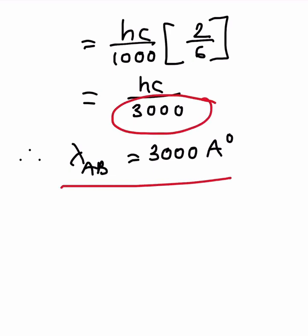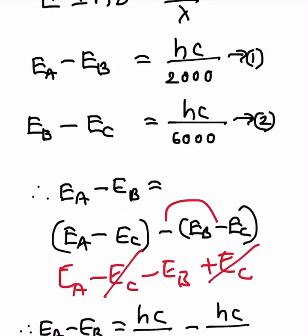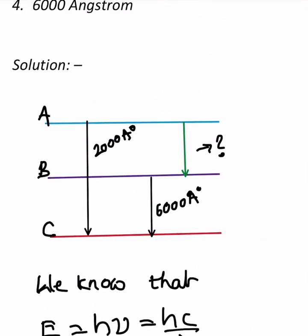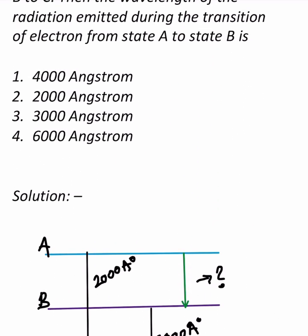Since the denominator is 3000, the wavelength for the A to B transition is 3000 angstroms. Checking the options, this corresponds to the third option. Thanks for watching — see you in the next video with one more problem. God bless you all.